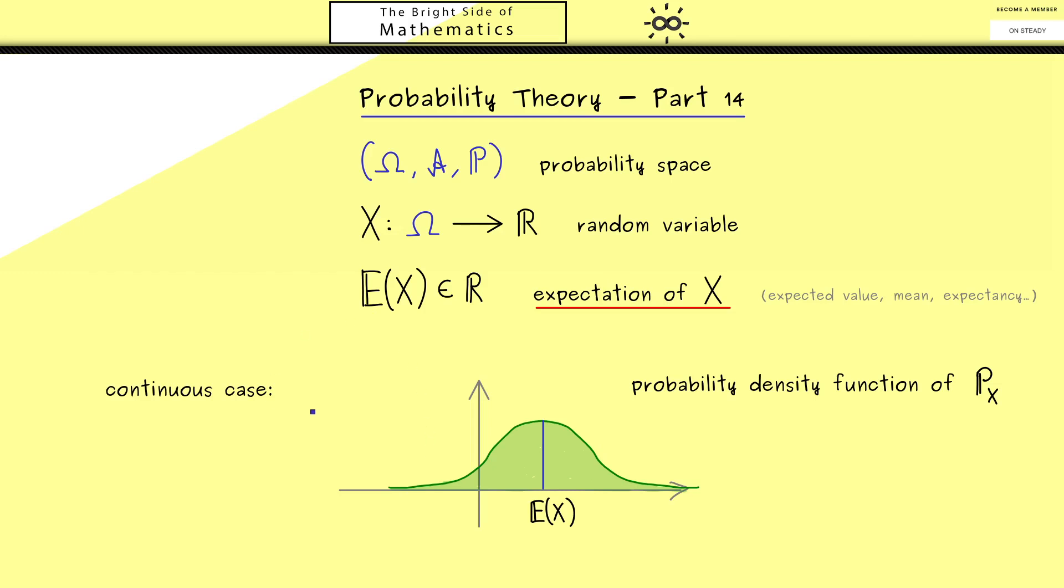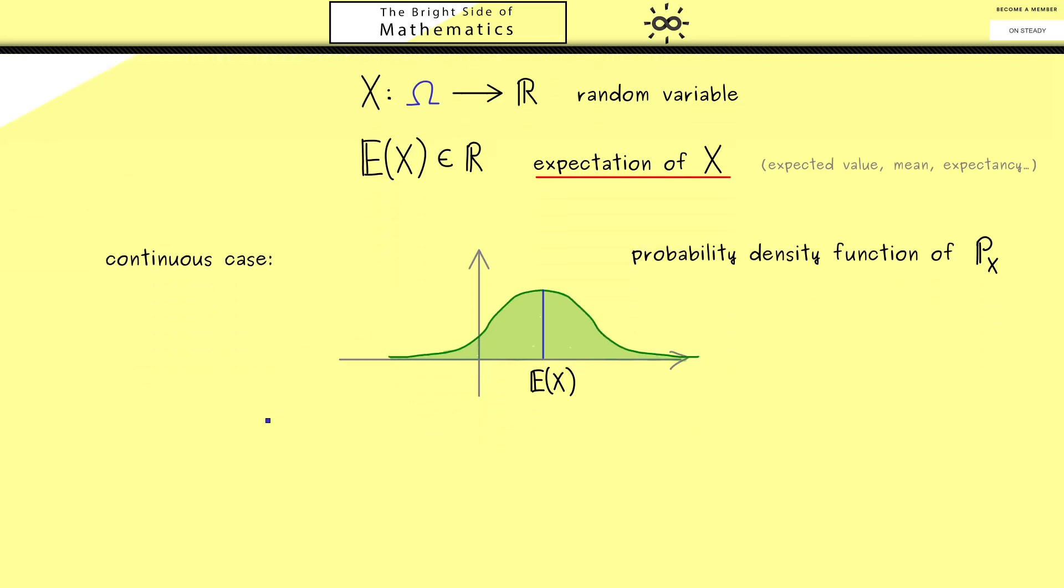Now of course we will define this in general. The definition should work for a lot of random variables X. The assumptions are the same as before: we have a general probability space and a given random variable X.